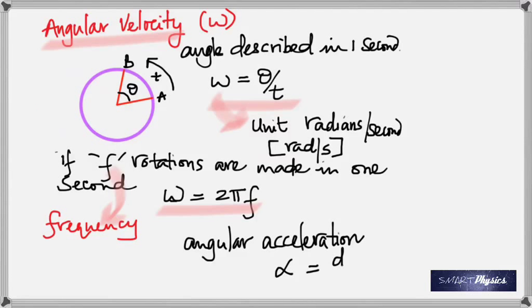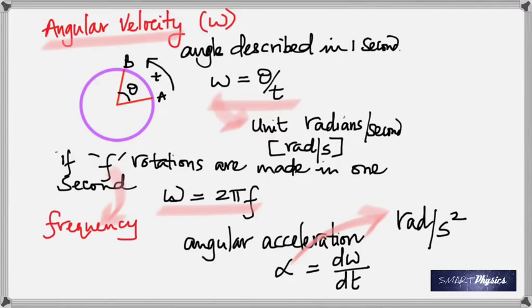Angular acceleration has the symbol alpha. Just as linear acceleration is change in velocity over time, angular acceleration is change in angular velocity over time. The unit is radians per second squared, just like meter per second squared for linear acceleration. Alpha replaces linear acceleration A in the rotational motion comparison.